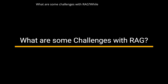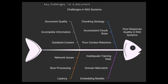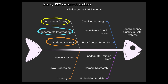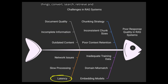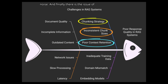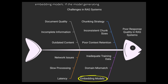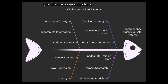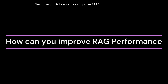What are some challenges with RAG? While RAG is powerful, it does come with a few key challenges. First is document quality — if your source documents are messy, outdated, or poorly written, the system might retrieve bad context, and that means poor answers. Second is latency — RAG systems do multiple things: convert, search, retrieve, and generate. If any part is slow, your user will feel the delay. Third is the chunking strategy — if you break documents into chunks that are too large or too small, you might lose important context or overwhelm the model with noise. And finally, there is the issue of embedding models — if the model generating embeddings doesn't understand your domain, like legal, medical, or finance, you will get poor matches. Fixing these issues is critical to make your RAG system fast, accurate, and reliable.